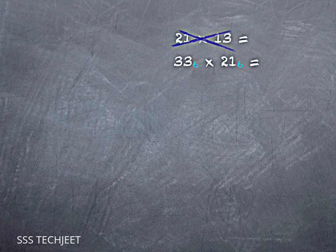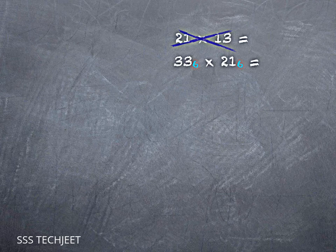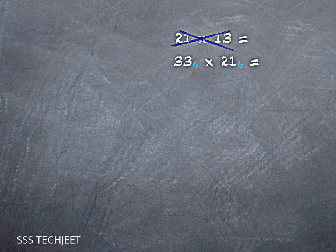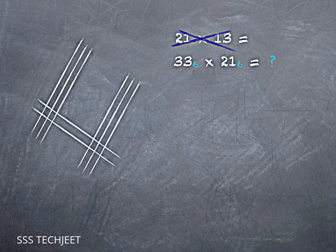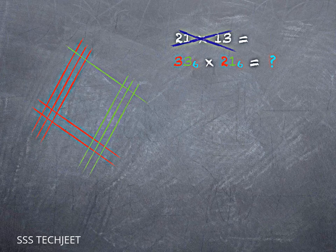So twenty-one is just three three in base six. You can kind of verify that two tens and one one are the same as three sixes and three ones. And then thirteen, which is one ten and three ones, is also two sixes and one one. So now we can draw our picture just like we did before. Three in the sixes place, and three in the ones place, two in the sixes place, and one in the ones place. And again, let's color code it to keep track.